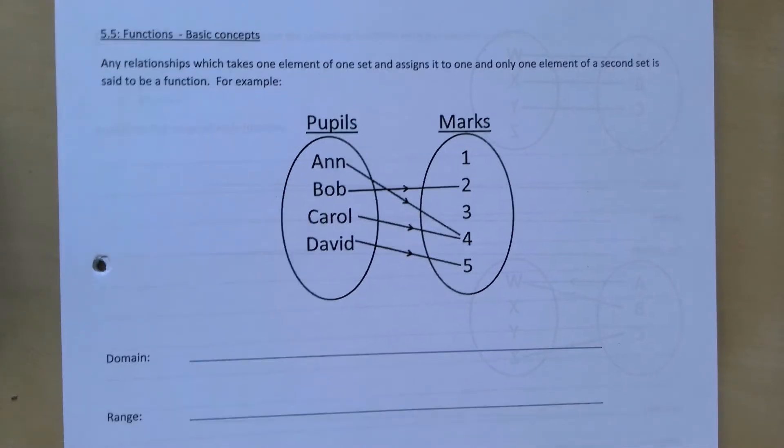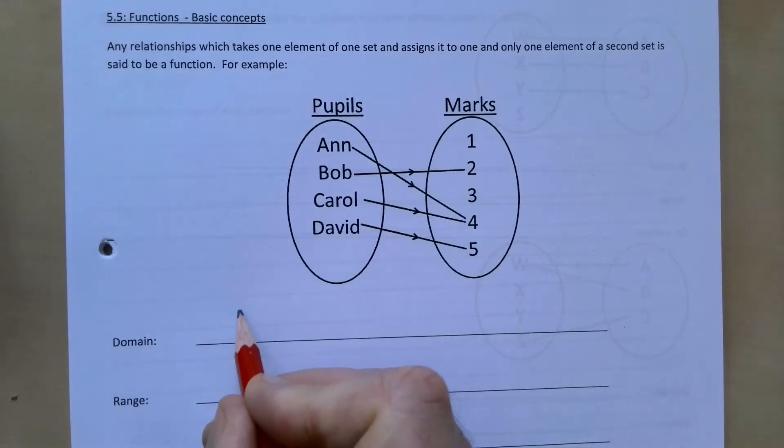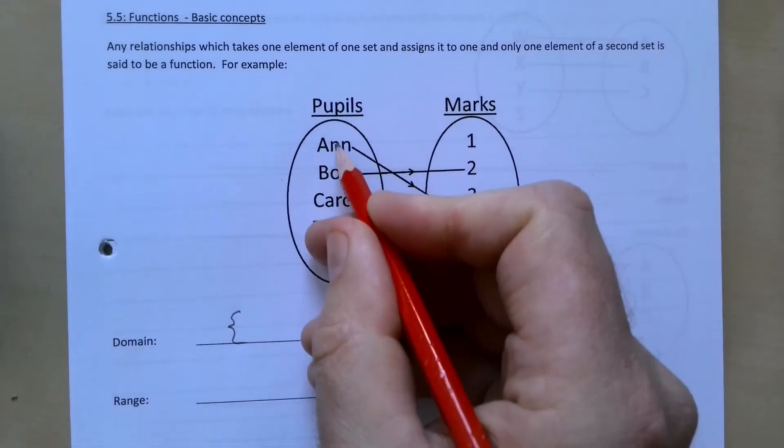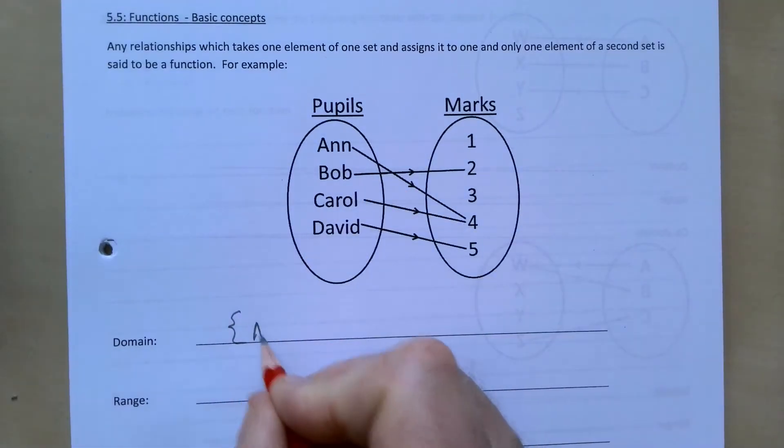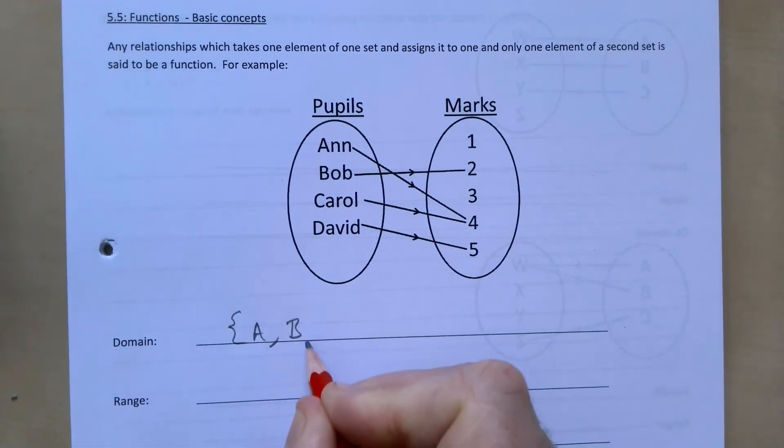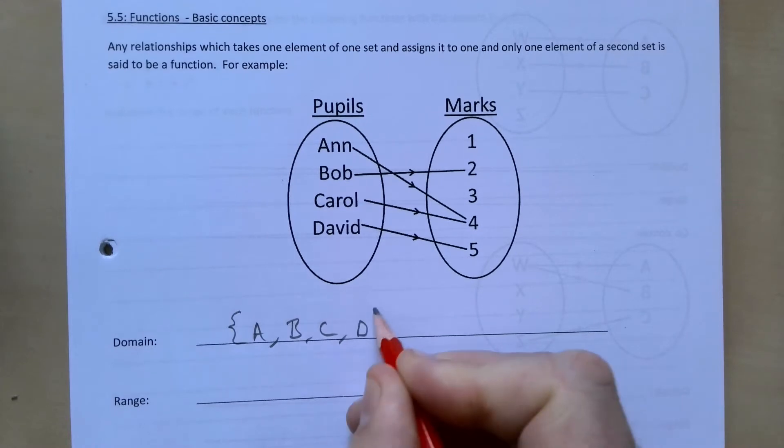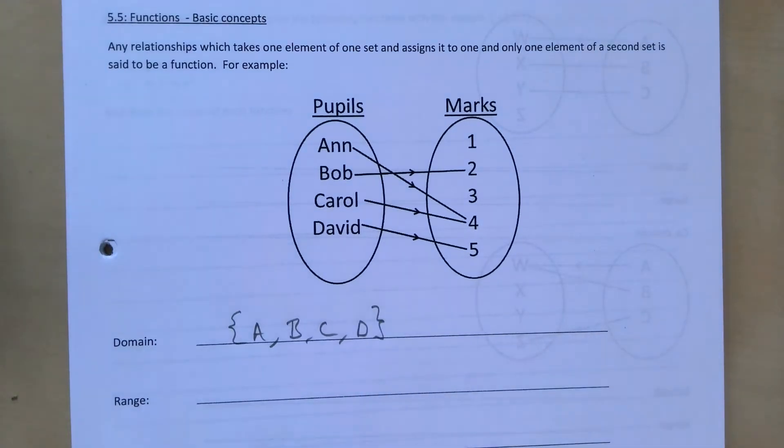A few definitions for us here then. So the domain are Ann, Bob, Carol, and David. That's where we start off from. The range...